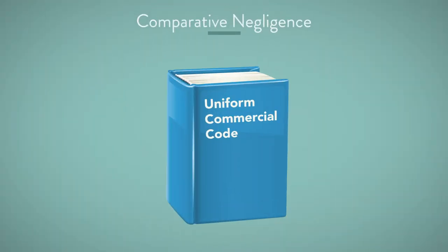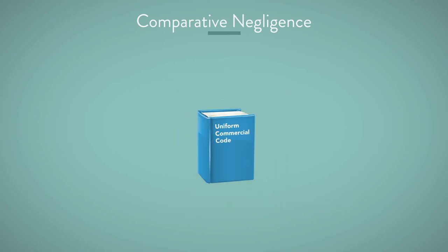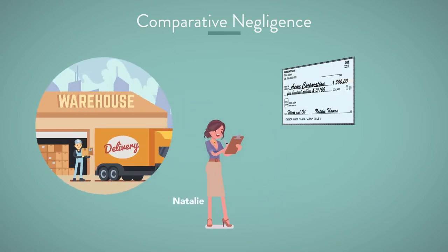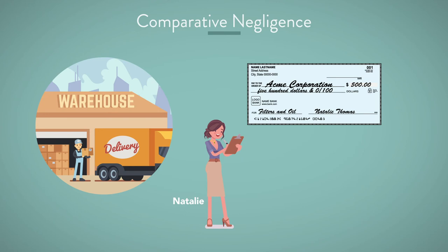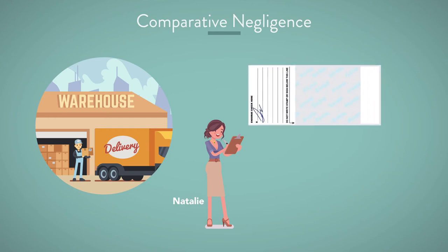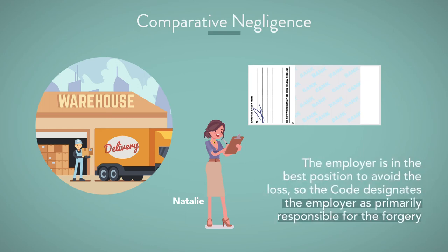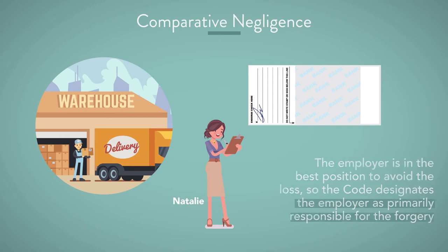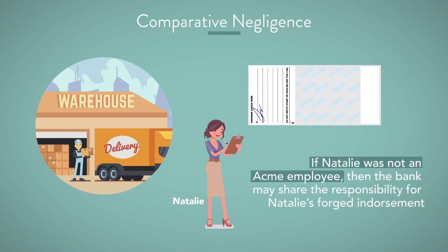The Code uses a comparative negligence approach in determining whether the employer should be liable for the dishonest employee's actions. For example, Natalie is a clerk at a large warehouse who issues company checks to service providers. She issues a check to Acme Corporation, then forges Acme's endorsement and deposits the check into her own account. The employer is in the best position to avoid the loss, so the Code designates the employer as primarily responsible for the forgery. However, if Natalie's signature made it evident she was not an Acme employee, the bank may share responsibility under the Code's comparative negligence rules.